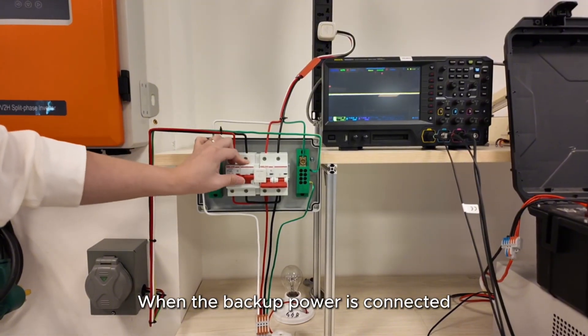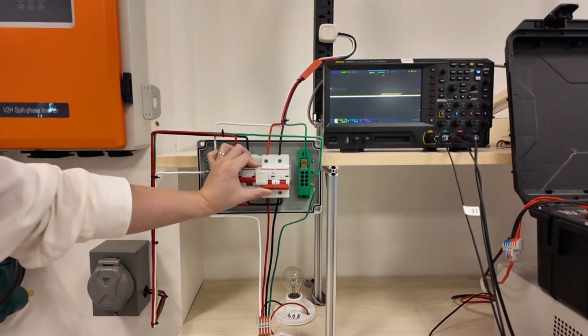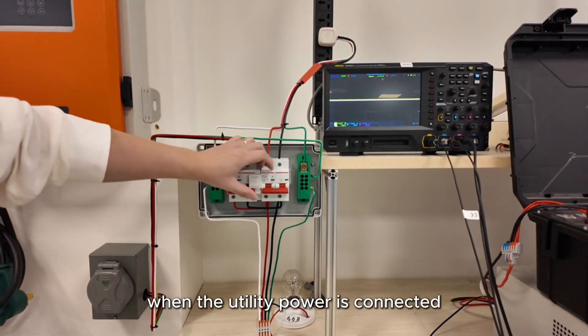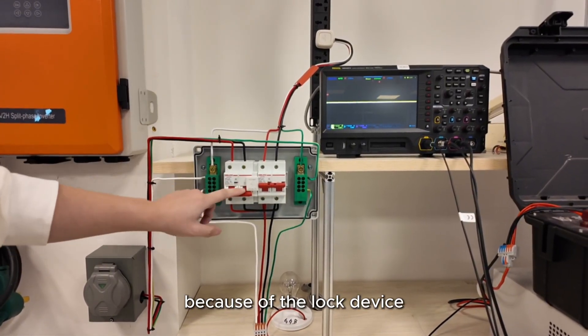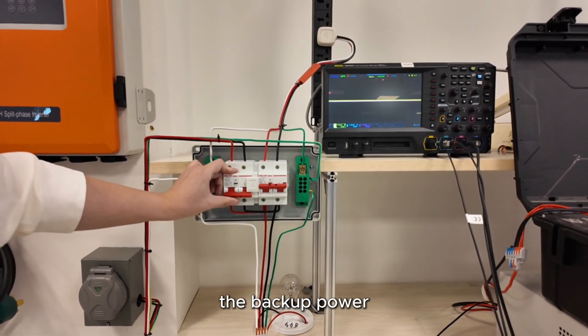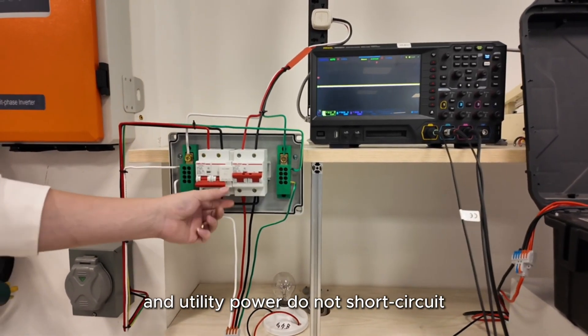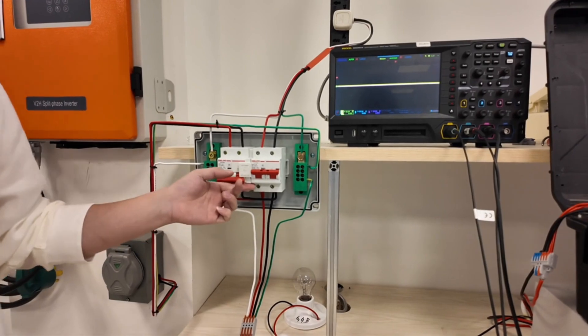When the backup power is connected because of this lock device, the utility power cannot be backfed. Likewise, when the utility power is connected because of the lock device, the backup power cannot be backfed either. This ensures that backup power and utility power do not short circuit.